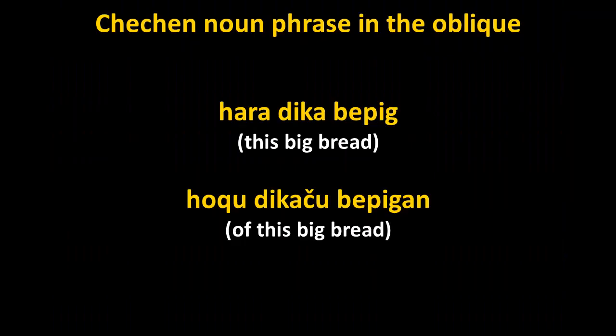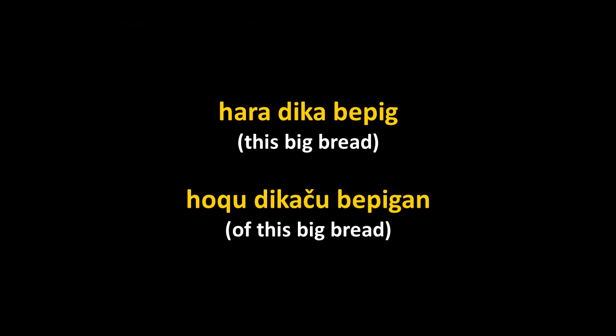Let's take a look at a noun phrase in Chechen. Har is the demonstrative 'this,' dekan is 'big,' and bepig is 'bread.' The noun phrase word order is exactly like English: har dekan bepig — 'this big bread.' In the oblique case, the word for bread goes to the genitive as bepkan. The modifiers go to the oblique form as well; in the case of har, there is an irregular oblique form roku instead of harachu. So roku dekachu bepkan means 'of this big bread' — the genitive form.